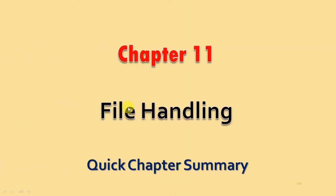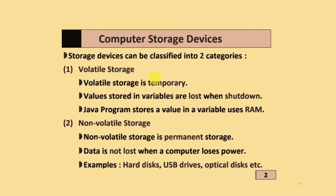Chapter 11 – File Handling. Let's start a quick chapter summary. The first topic is Computer Storage Devices, which can be classified into two categories: Volatile Storage and Non-Volatile Storage.